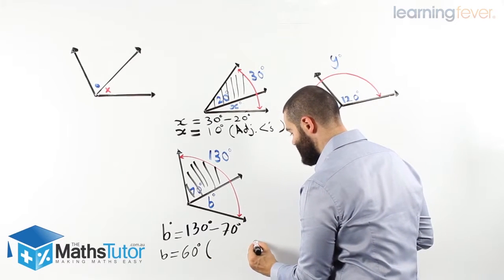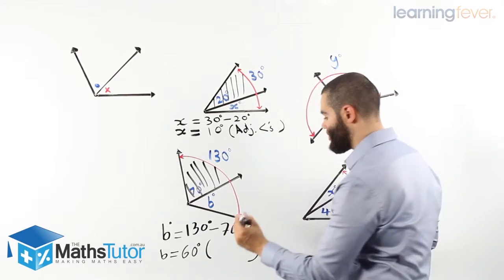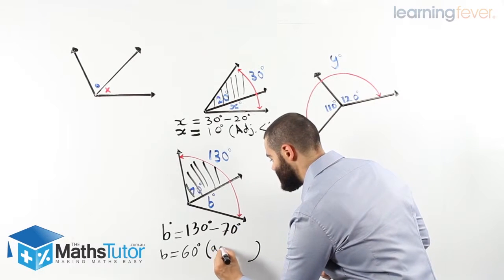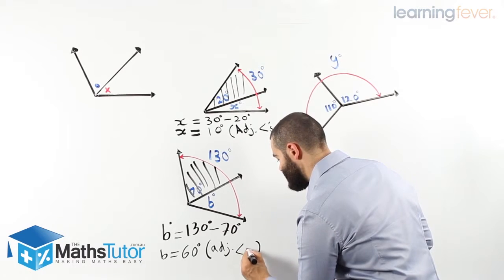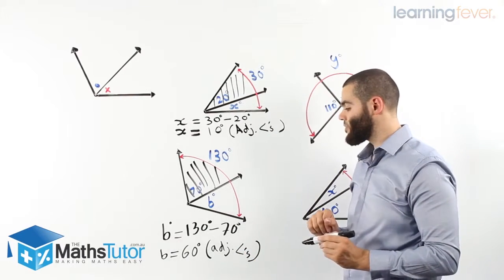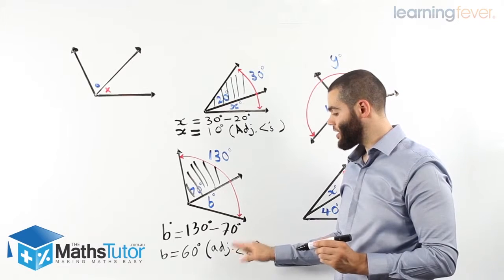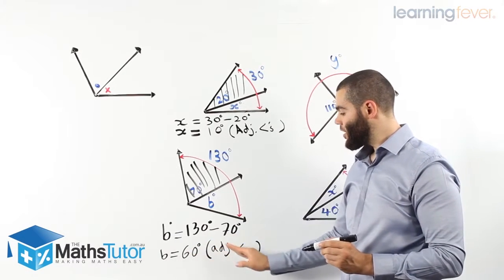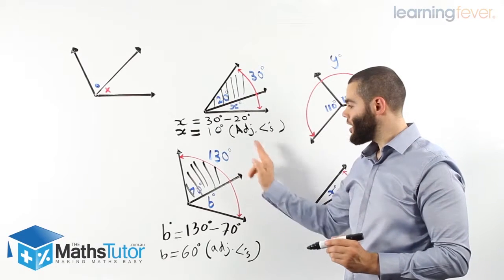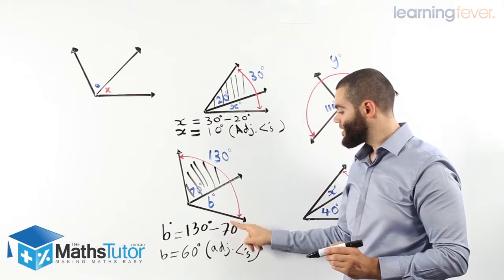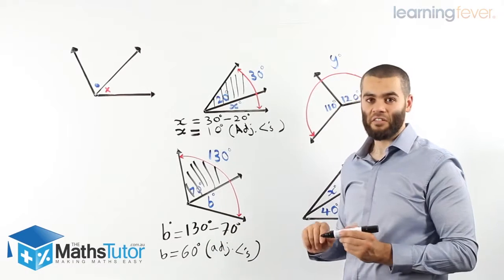And as always, we have to write our reason: adjacent angles is the justification. We are reasoning, we are saying B is 60, because these two are adjacent. They both make up 130. 130 take away 70, B must be 60 degrees.